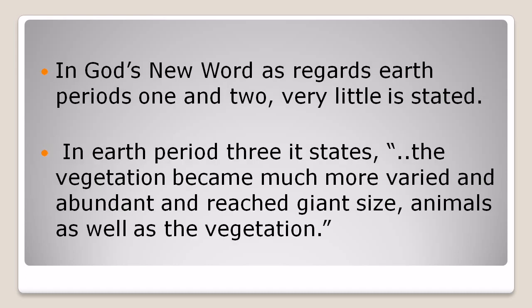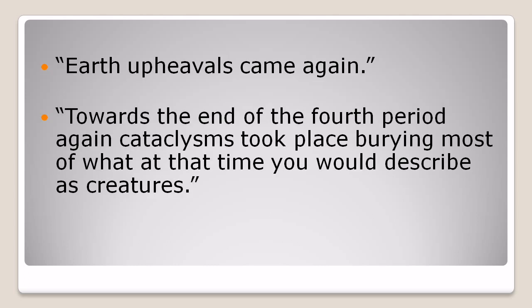In God's new word, as regards earth periods one and two, very little is stated. In earth period three it states: the vegetation became much more varied and abundant and reached giant size — animals as well as the vegetation. Earth upheavals came again.